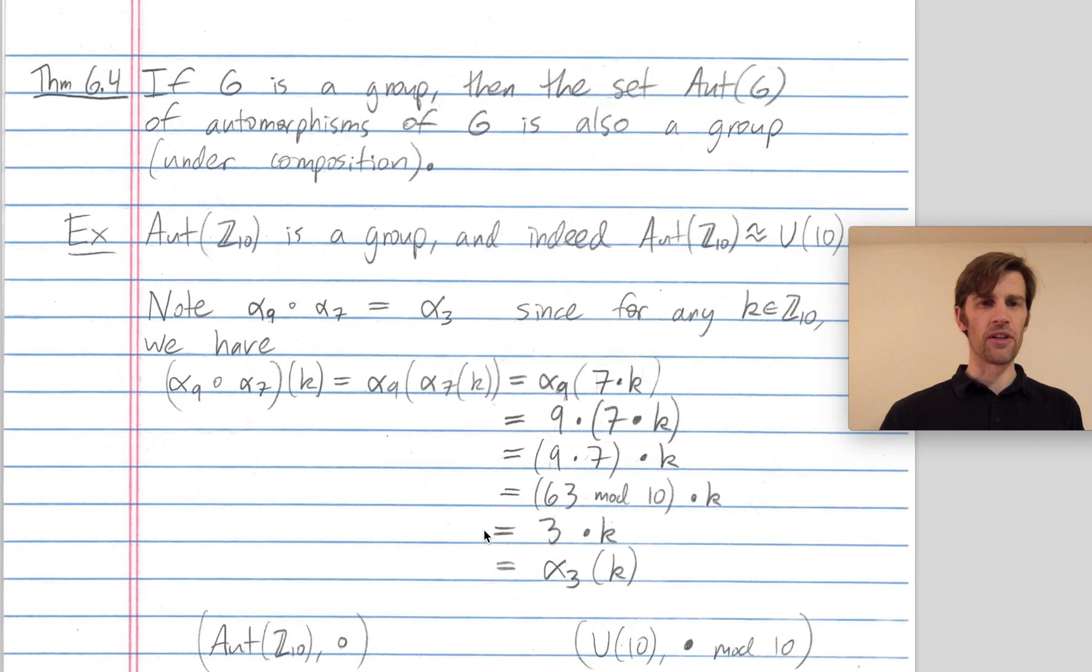In summary, the main point of this video is that if G is a group, then the set Aut(G) of automorphisms of G is also itself a group. The binary operation in this group of automorphisms is function composition. A mistake that beginners make is thinking that G and the automorphism group of G are the same. No, that's certainly not. The main example to keep in mind is Z mod 10. Z mod 10 is a group with 10 elements, whereas its automorphism group, the automorphisms of Z mod 10, is a group with only 4 elements: alpha 1, alpha 3, alpha 7, and alpha 9. Thanks.